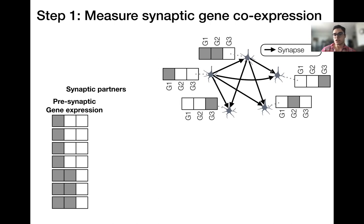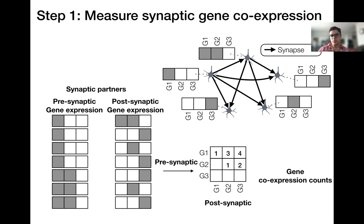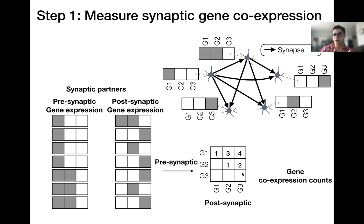For example, one neuron is pre-synaptic to four other neurons, so we list its gene expression four times. Next, we list the gene expression in all corresponding postsynaptic terminals. Given the pairs of pre- and postsynaptic gene expression values, we tabulate a gene co-expression table that counts the number of times a gene expressed in pre-synaptic neurons co-occurs with genes expressed in post-synaptic neurons. For example, gene 1 in the pre-synaptic neuron is paired with gene 2 in the post-synaptic neuron, so we add a count to the corresponding cell in the co-expression table. We do this for all genes and all synapses until we fill this table, which gives an idea of which gene combinations tend to be enriched in synapses.